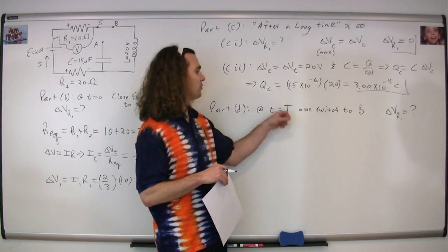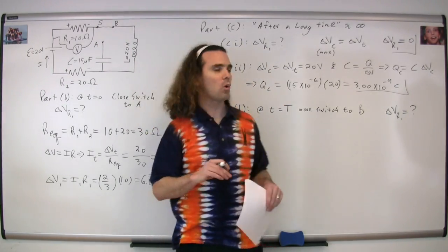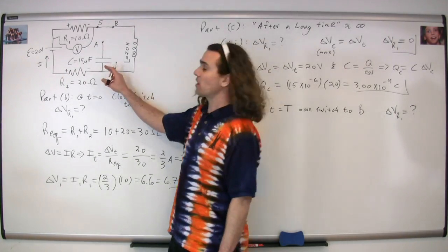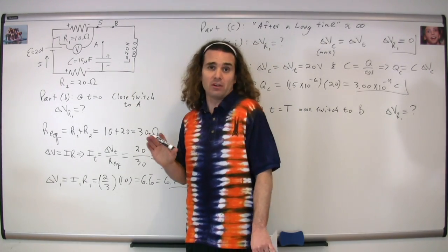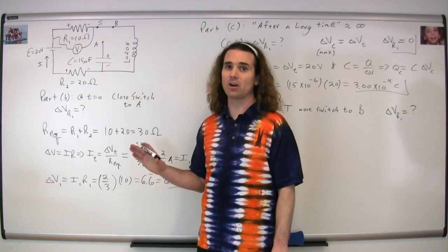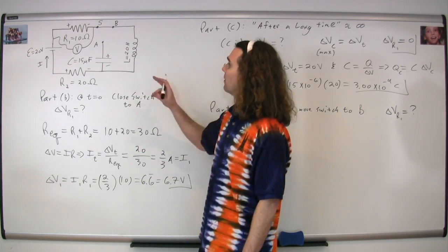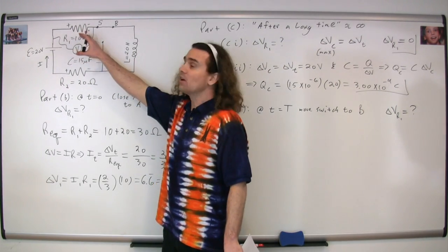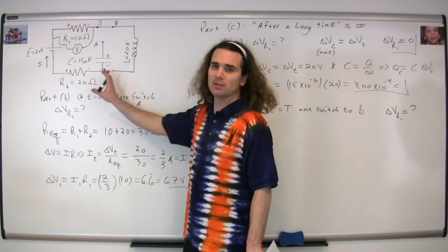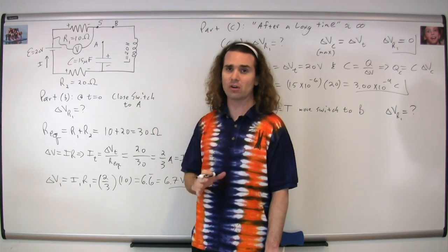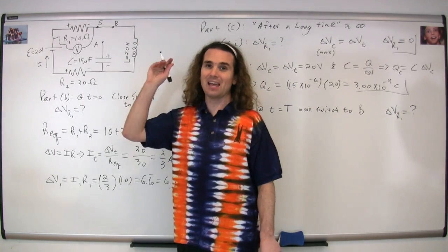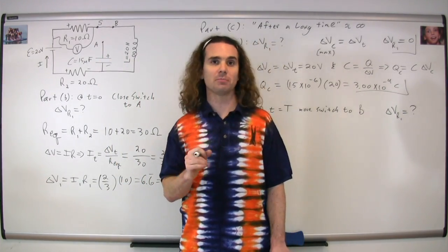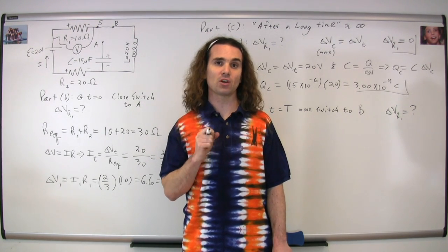Part D: at time T equal to capital T, we move the switch to position B. The question is, what is the potential difference across resistor 1 right when we flip the switch? Remember, the capacitor is fully charged and we've just disengaged it from the circuit — the charge stays on it because it needs a closed loop to discharge. Inductors resist a change in current; the initial current through resistor 1 right when we flip the switch to B is zero, and the inductor keeps it at zero. Therefore, the electric potential difference across resistor 1 is also equal to zero.